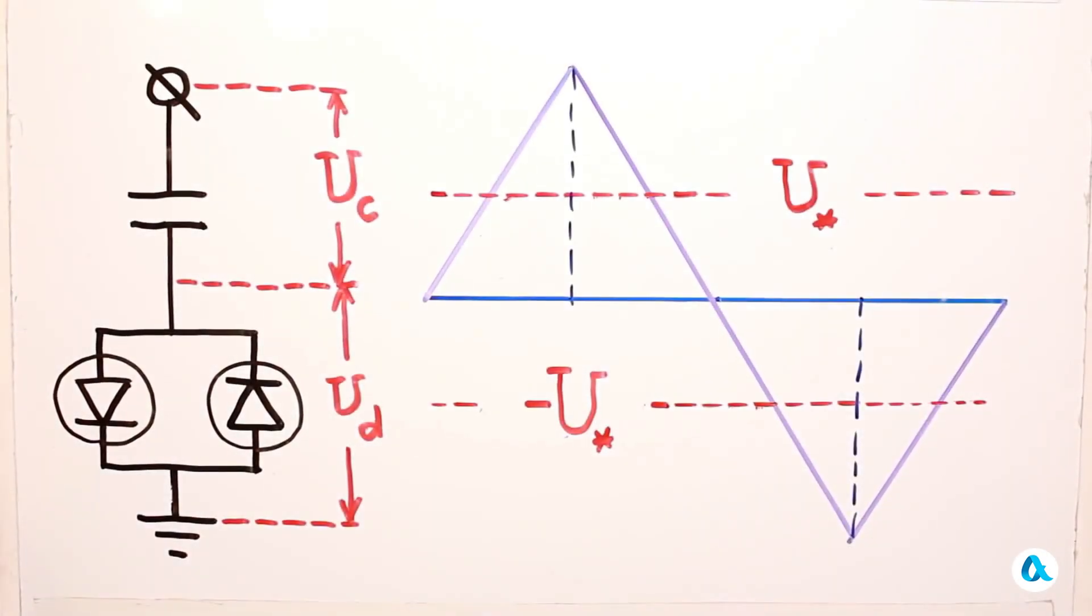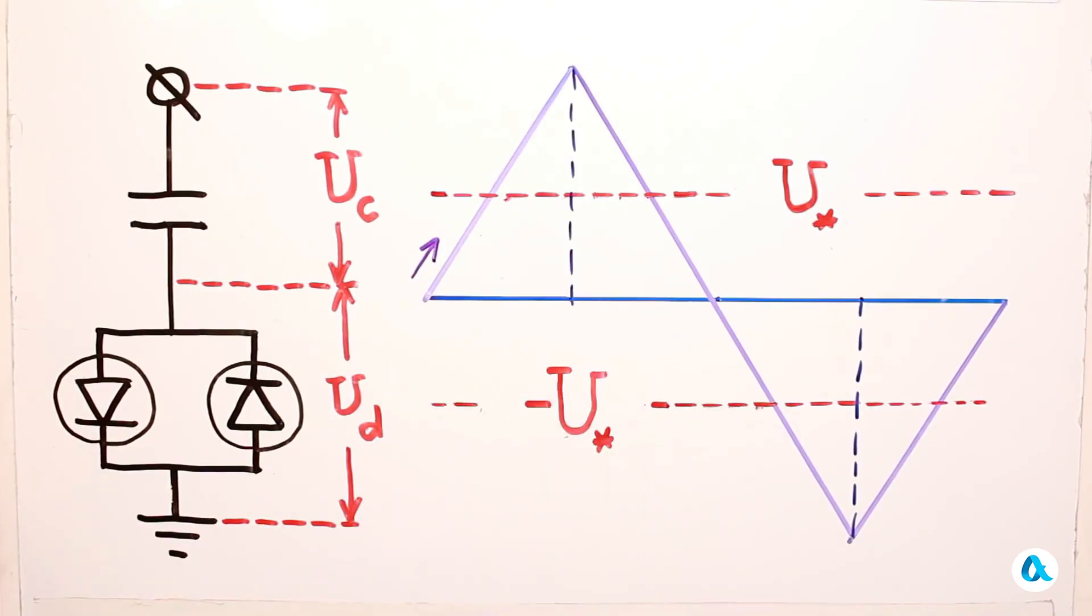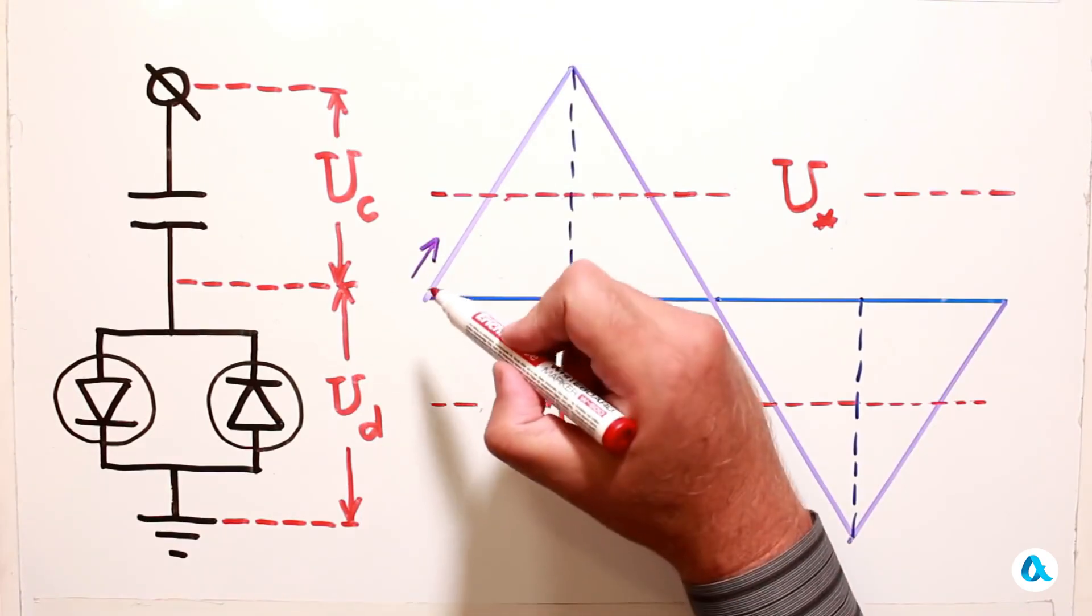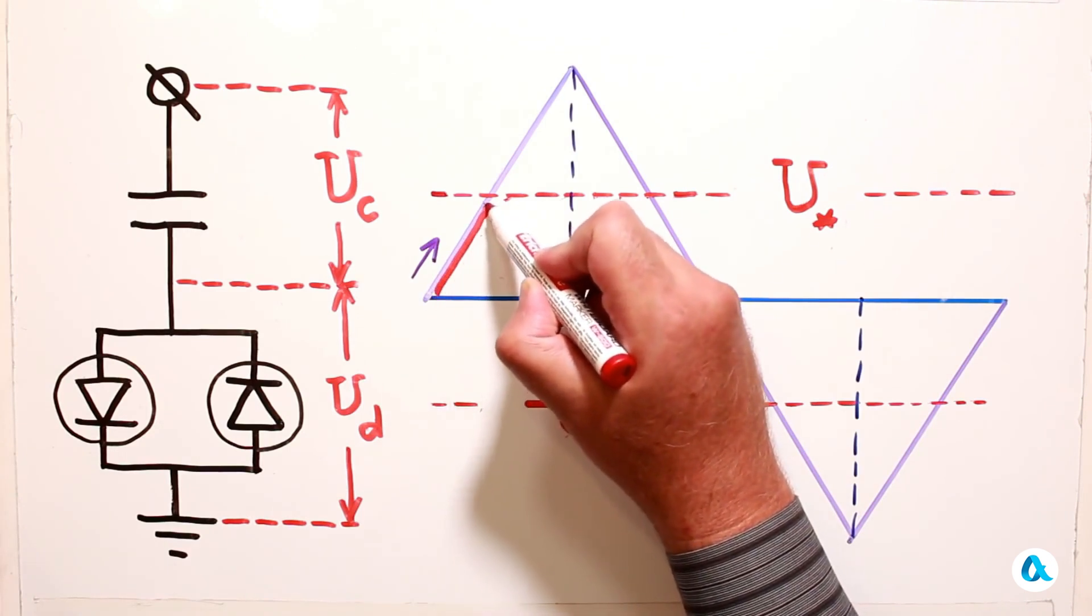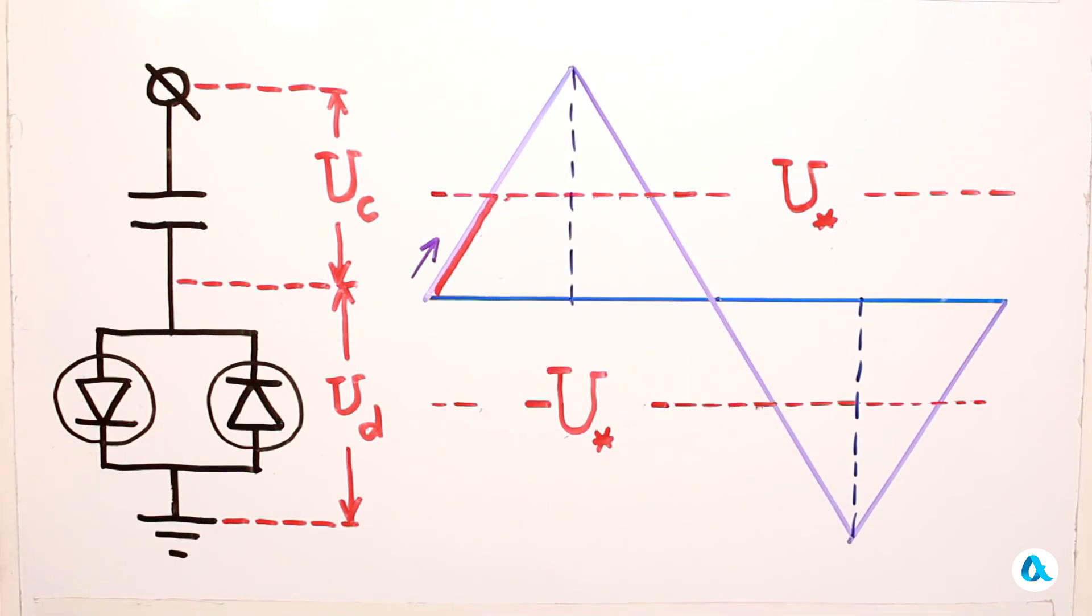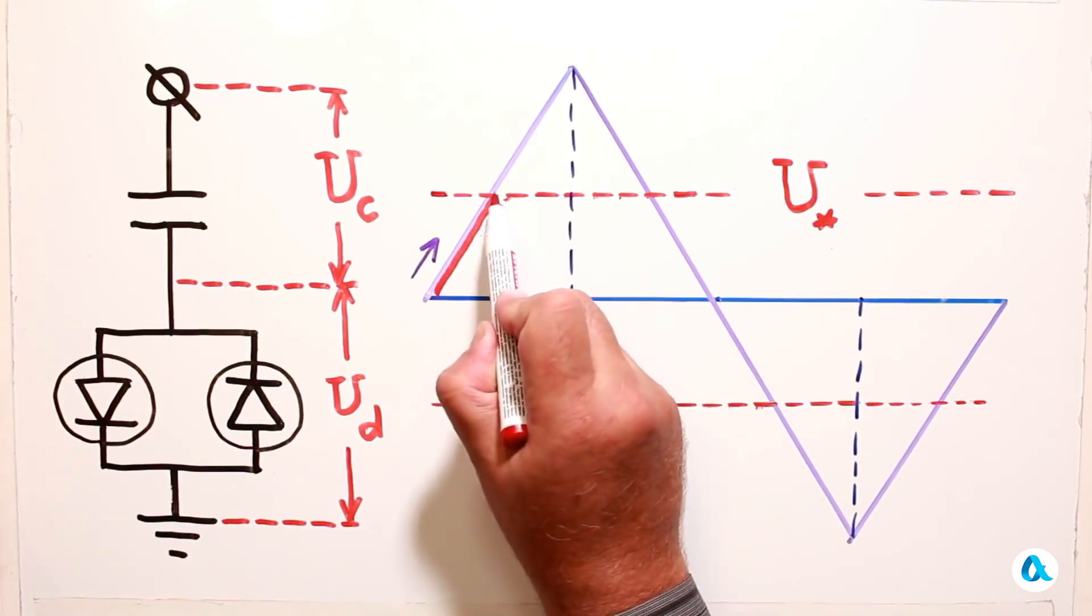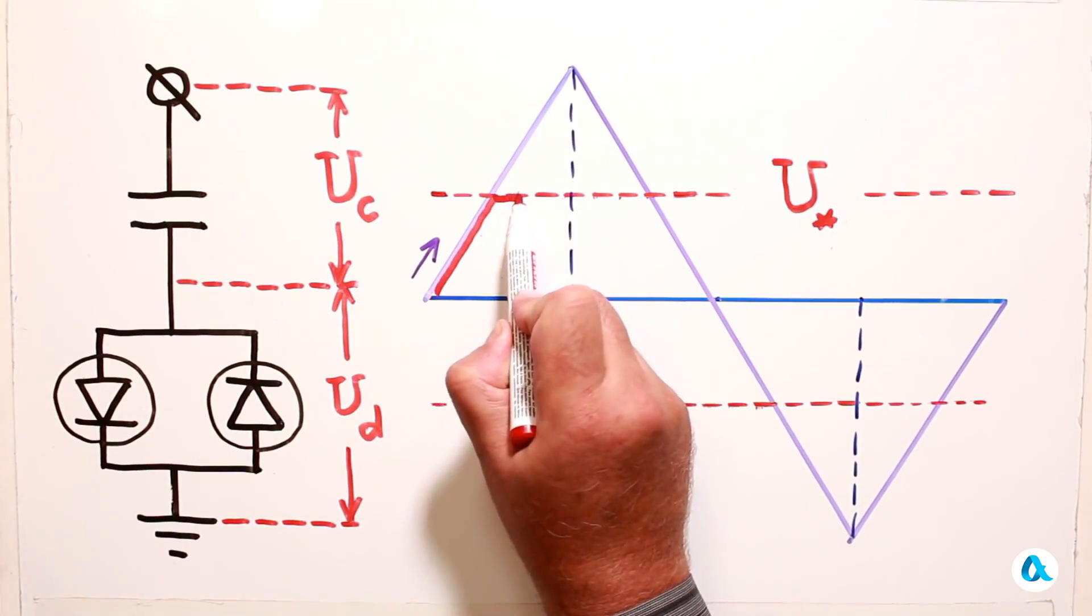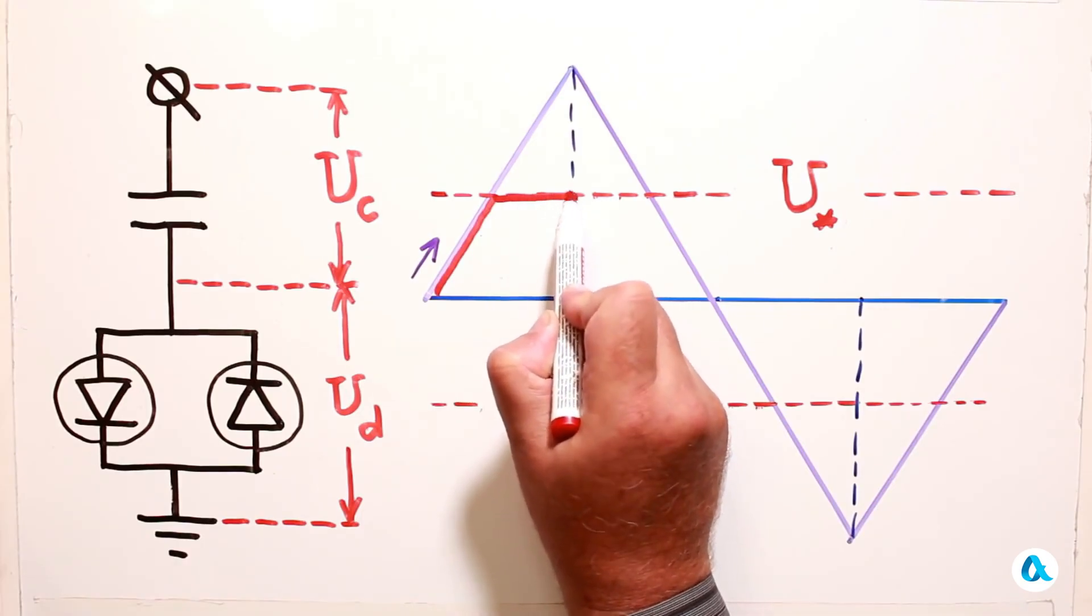Let's plot one period of the sawtooth voltage on a graph. At first both diodes are off, the total voltage starts to rise up, and along with it the voltage across the diode switch increases as well. When the voltage reaches the value U with an asterisk, the switch opens. After that, the voltage across it remains constant while the voltage across the capacitor increases.